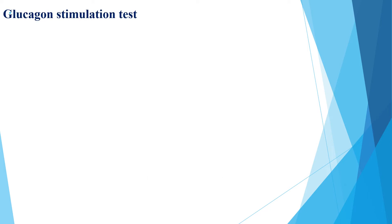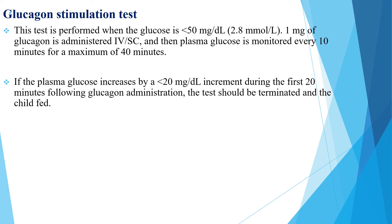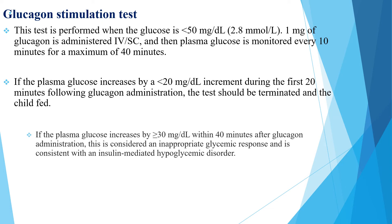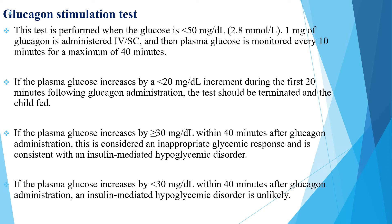The glucagon stimulation test is performed when glucose is less than 50 mg/dL. One mg of glucagon is administered IV or subcutaneous, and plasma glucose is monitored every 10 minutes for a maximum of 40 minutes. If plasma glucose increases by less than 20 mg/dL during the first 20 minutes, the test should be terminated and the child fed. If plasma glucose increases by more than 30 mg/dL within 40 minutes, this is considered an inappropriate glycemic response consistent with insulin-mediated hypoglycemia. If plasma glucose increases by less than 30 mg/dL within 40 minutes, an insulin-mediated disorder is unlikely.